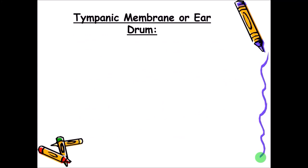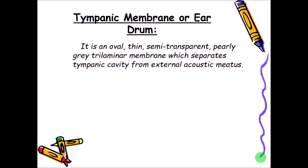The tympanic membrane, also called the eardrum, is a very important membrane which separates the external ear from the middle ear. It is an oval, thin, semi-transparent, pearly gray, tri-laminar membrane — tri-laminar because it has three layers. It separates the tympanic cavity of the middle ear from the external acoustic meatus.